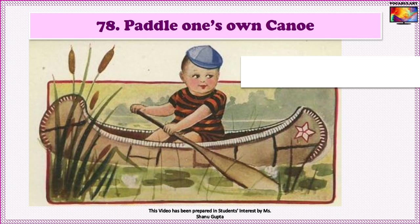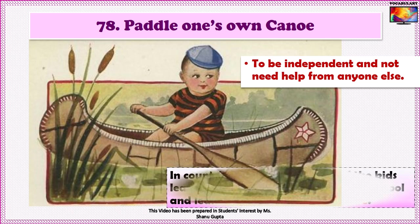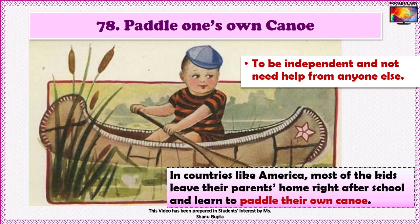Idiom No. 78 is 'To paddle one's own canoe.' A canoe is a light narrow boat which is propelled with the help of a paddle. If someone paddles his or her own canoe, it means he or she is independent and does not need help from anyone else. An example: 'Countries like America where most of the kids leave their parents' home right after school and learn to paddle their own canoe.'